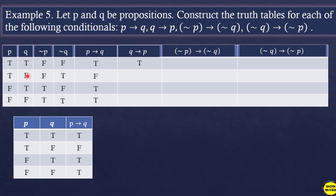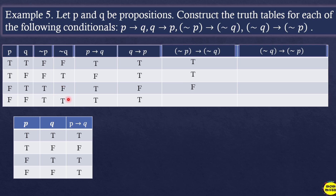For q→p, we look at the second column first, then the first column: F,T→T; T,F→F... wait, the values are: true,false→false; false,true→true; false,false→true. For ¬p→¬q, using third and fourth columns: false,false→true; false,true→false... A conditional is false only when the 'then' part is false.